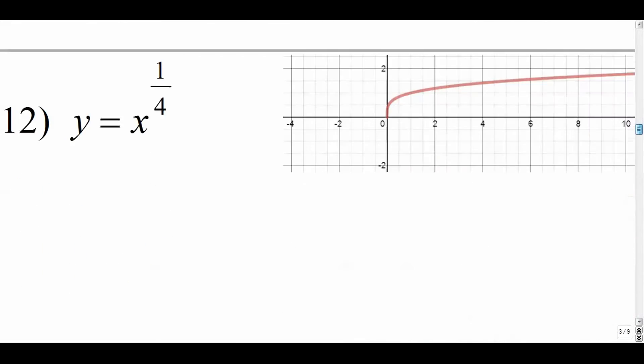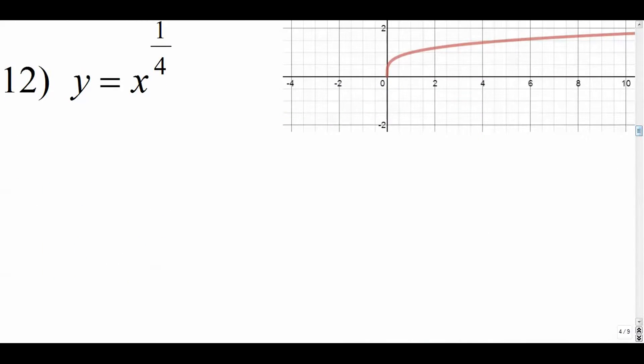But let's continue number 12. So again, we have a rational exponent here, which, if you remember, actually transfers into the fourth root of x. So again, we can't have any negative values here in our domain. So the way that we would write that is our domain, zero is okay, because we can find the fourth root of zero, the fourth root of zero is zero.